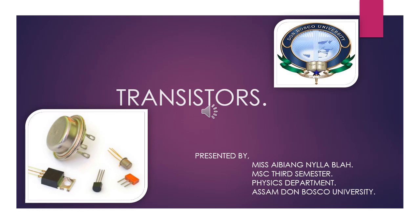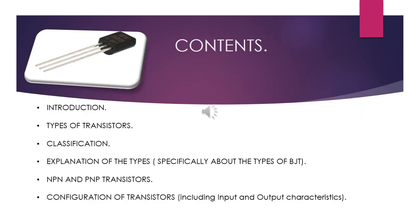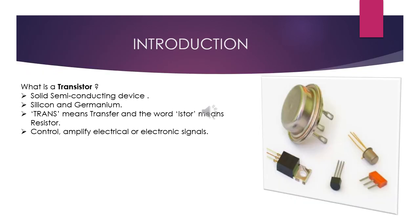Hello, my name is Ibiana Lablan and in this video I am going to talk about transistors. A transistor is a solid semiconducting device with at least three terminals and it is composed of silicon and germanium. From the word transistor itself, 'trans' means transfer and 'istor' means resistor — thus, a transistor is a transfer of resistor. A transistor is often used for controlling and amplifying electrical or electronic signals. You can find a transistor in your own house, in any electrical appliances — TV, radio, and so on.